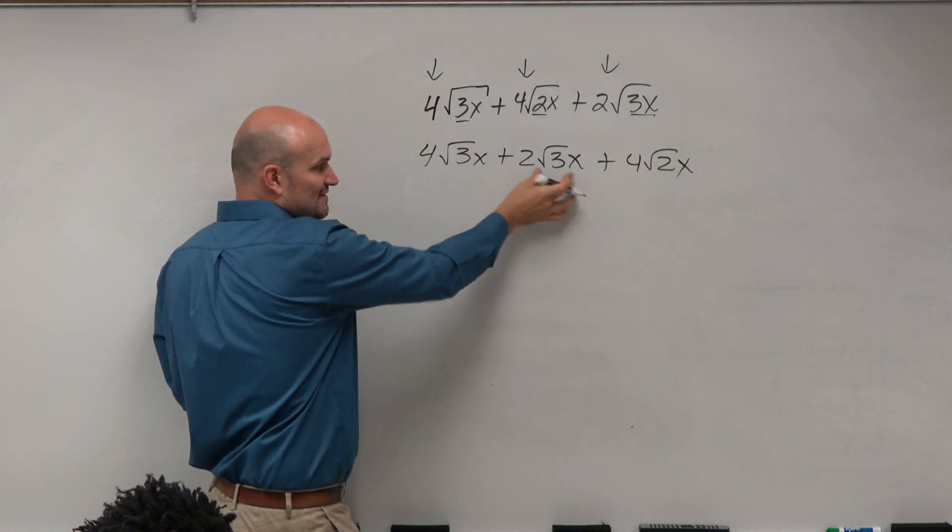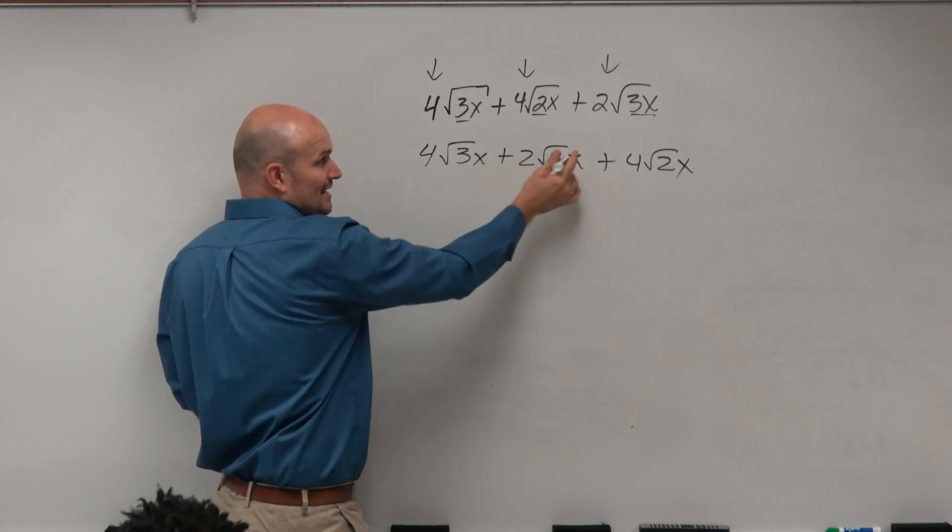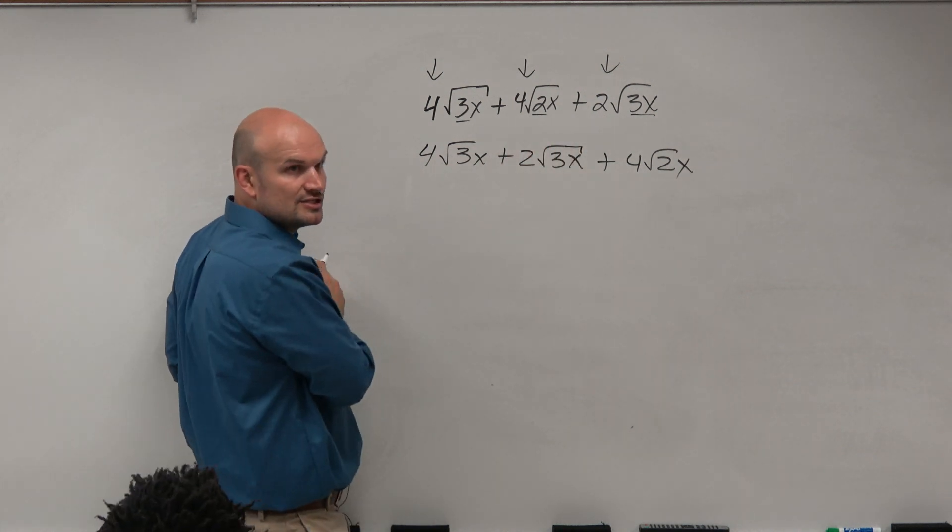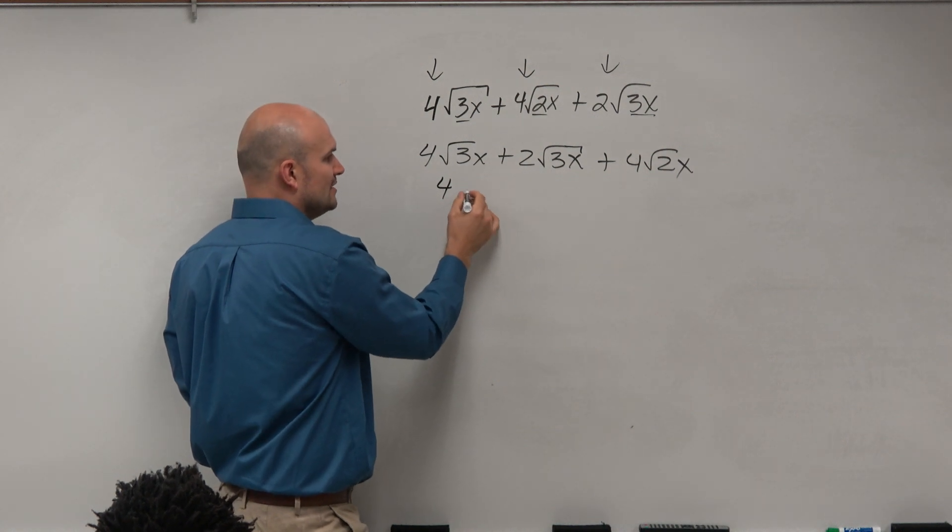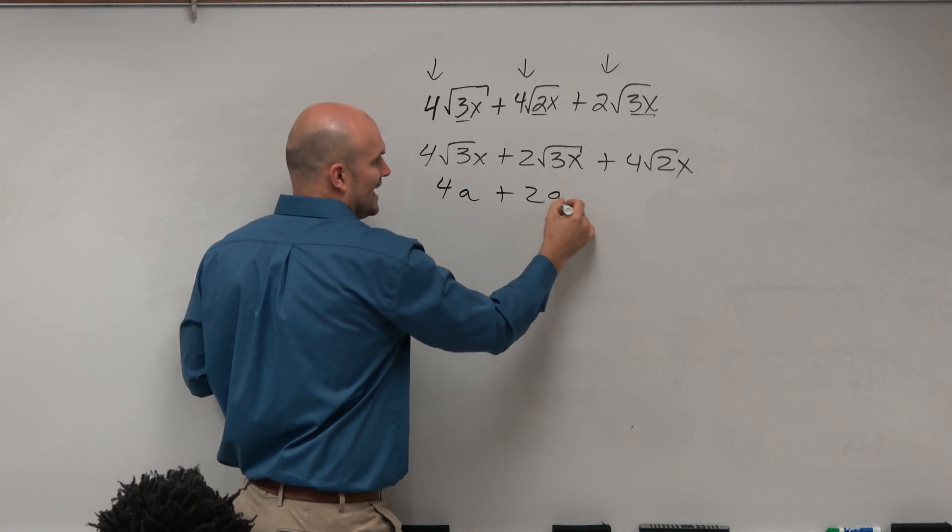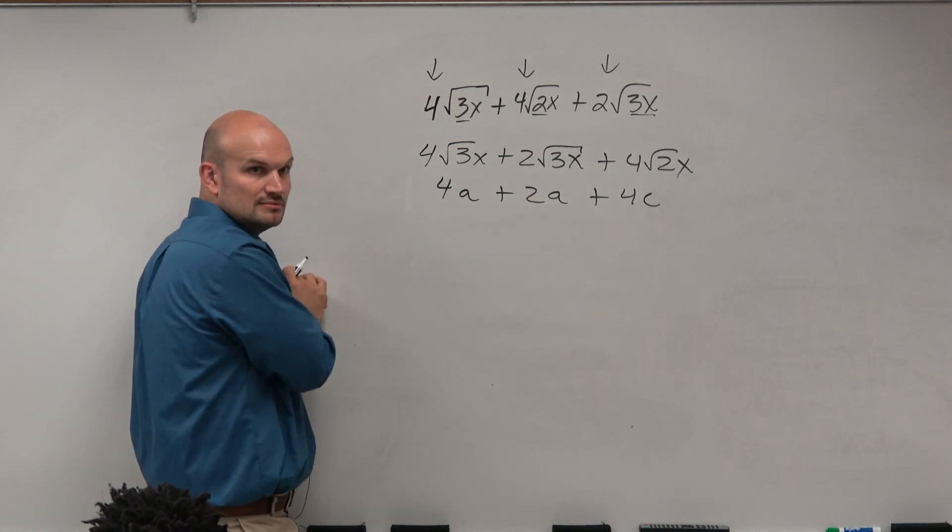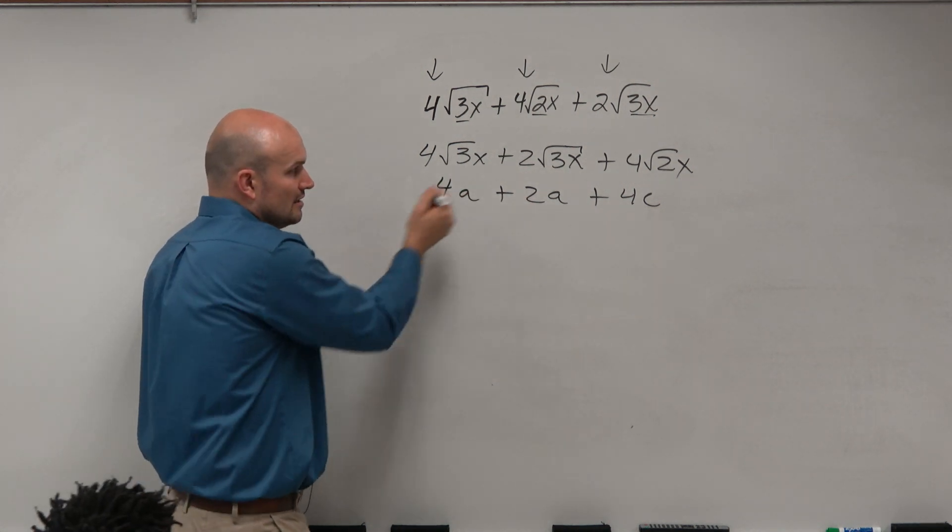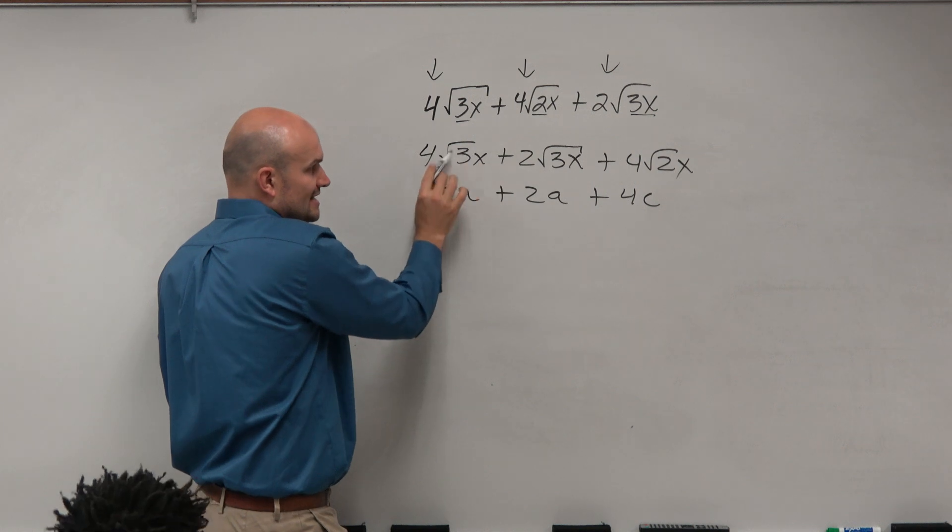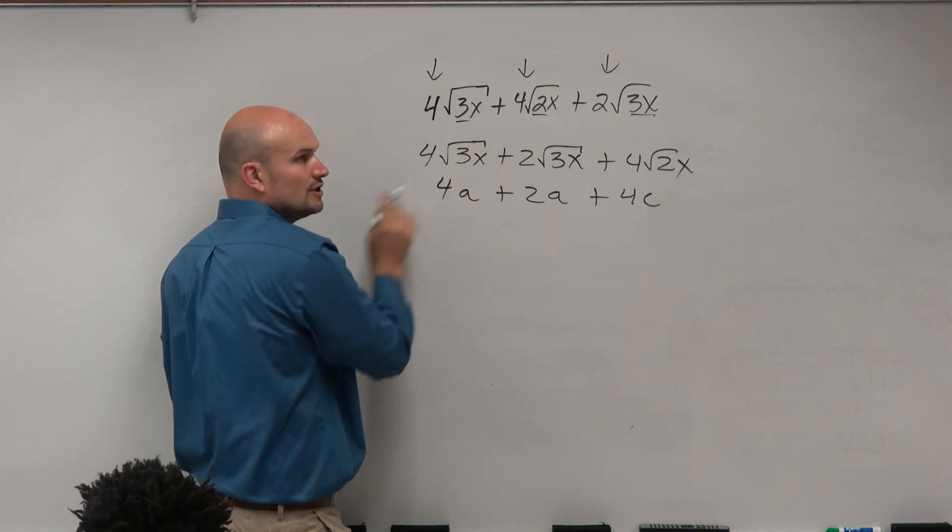Since these have the same index and radicand, they are considered like terms. Just like if I was to combine 4a plus 2a plus 4c, I can only combine these two, because those are the only like terms. So these are the same thing - the index and the radicand are the same, so they're like terms.